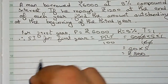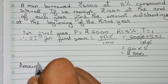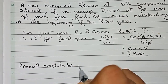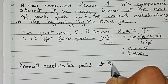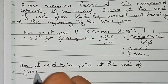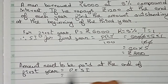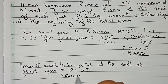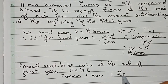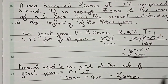Now the amount that needs to be paid at the end of the first year. The formula is Principal + SI, so 6000 + 300, which equals rupees 6300. This means that after one year, rupees 6300 is the amount that needs to be paid.